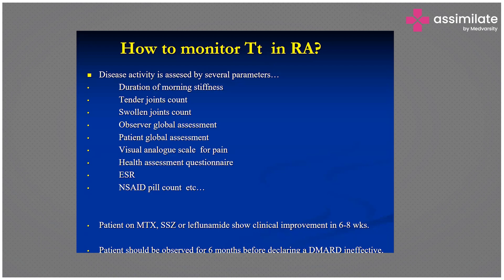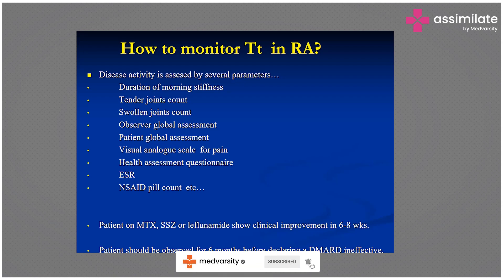The treat-to-target (T2T) approach in RA involves monitoring disease activity through parameters such as duration of stiffness, swollen joint count, visual analog scale, and patient global assessment. Patients started on methotrexate, sulfasalazine, or leflunomide typically show clinical improvement in six to eight weeks. The patient should be observed for six months before declaring a DMARD ineffective, and labs and scans should be reviewed.